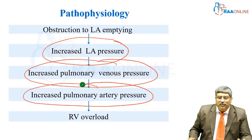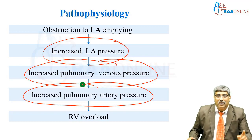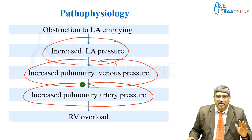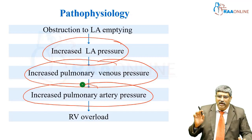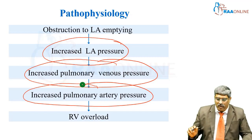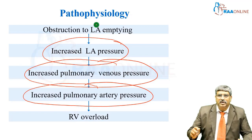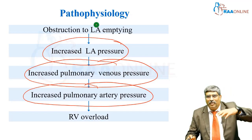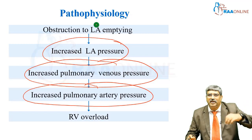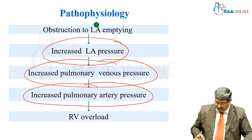You have to remember that the RV cannot tolerate pressure overload. It can take a bit of volume, but pressure overload it cannot tolerate. So with obstruction at the mitral level, LA pressure increases, pulmonary venous pressure increases, pulmonary artery pressure increases, and RV afterload is increased.